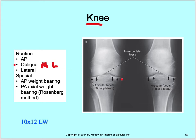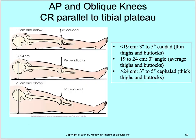For your AP knee, you want to be able to visualize the articular facets, the eminence, the intercondylar fossa, and your eminences as well as the tibial plateaus.